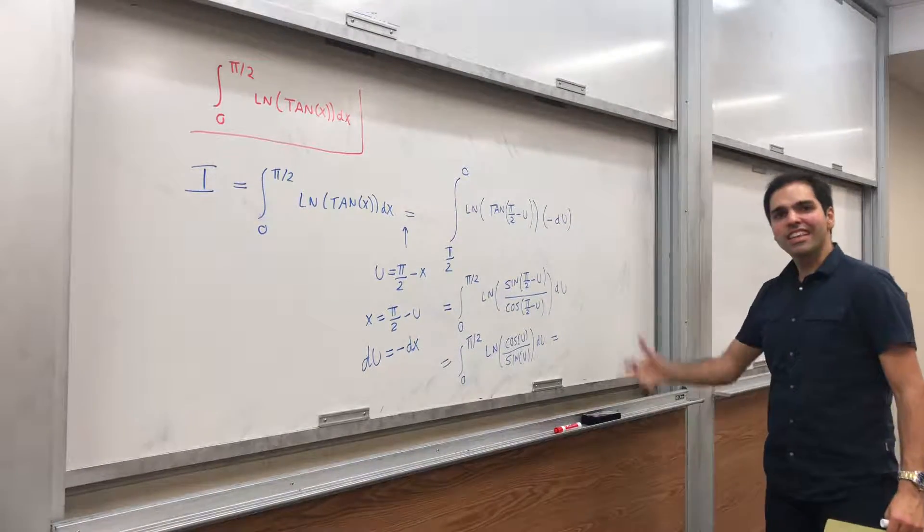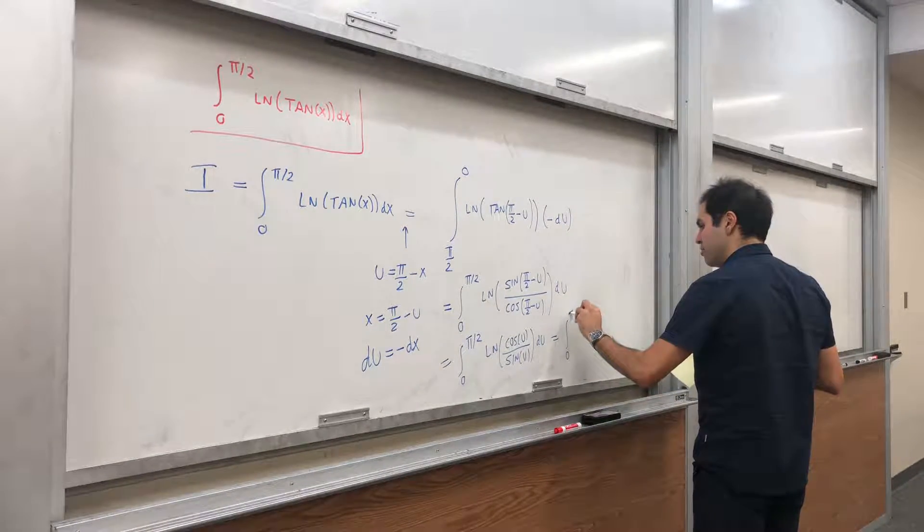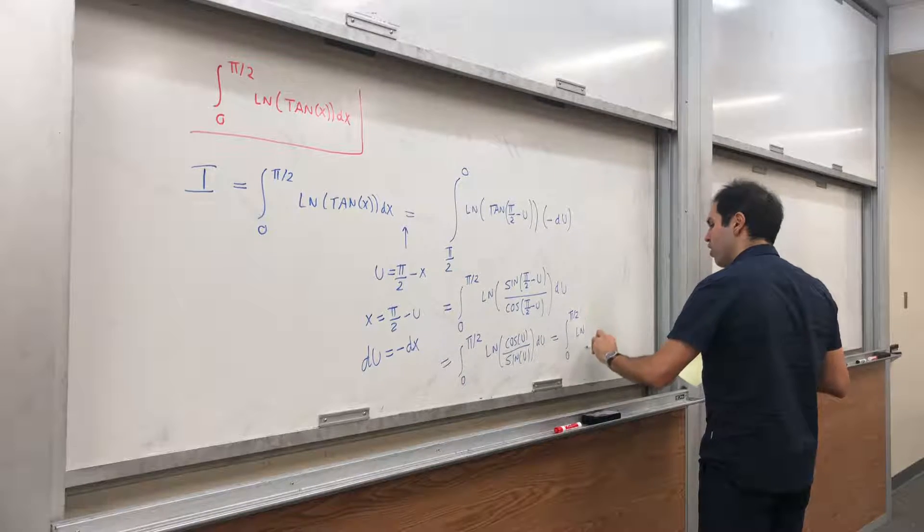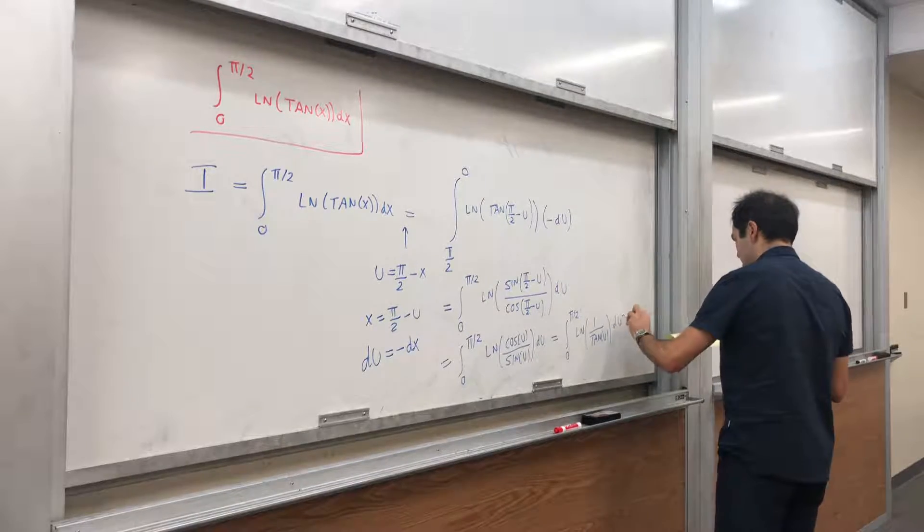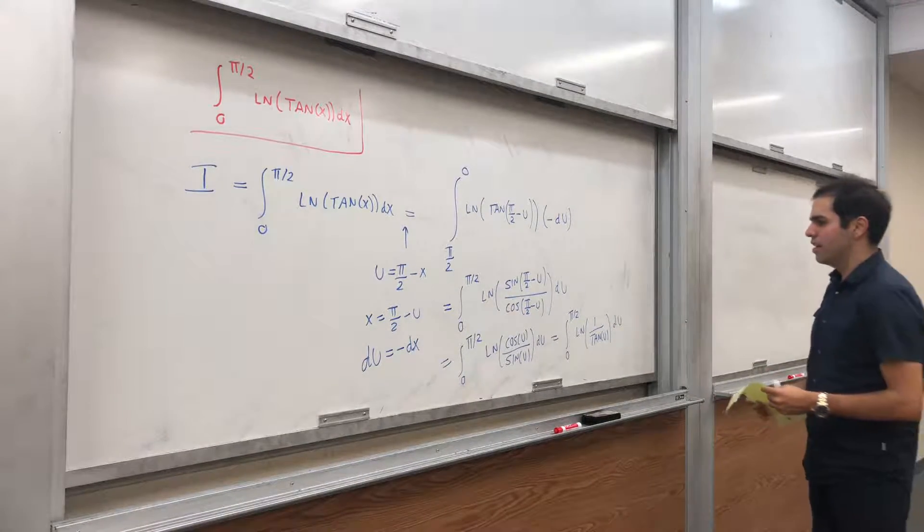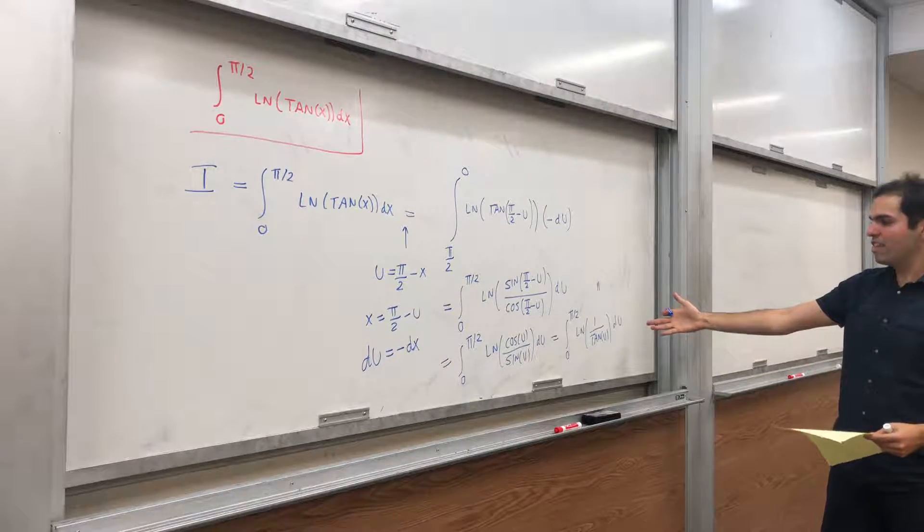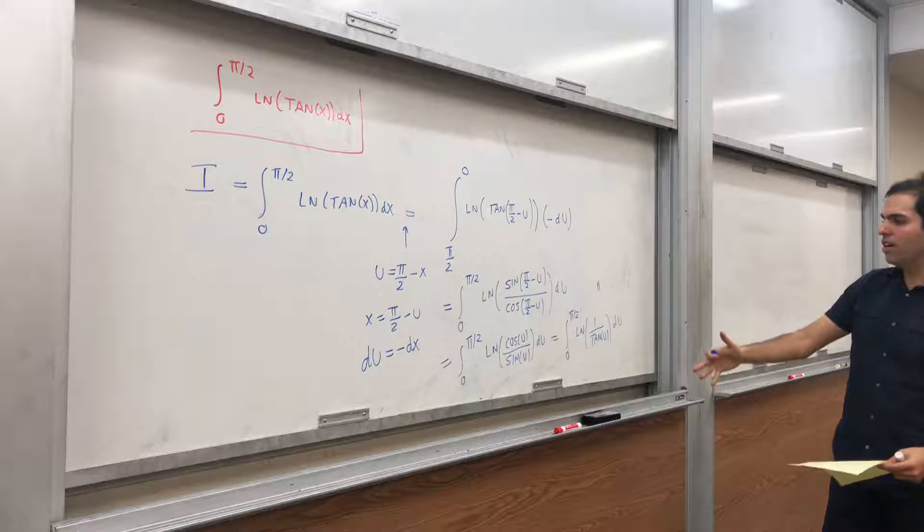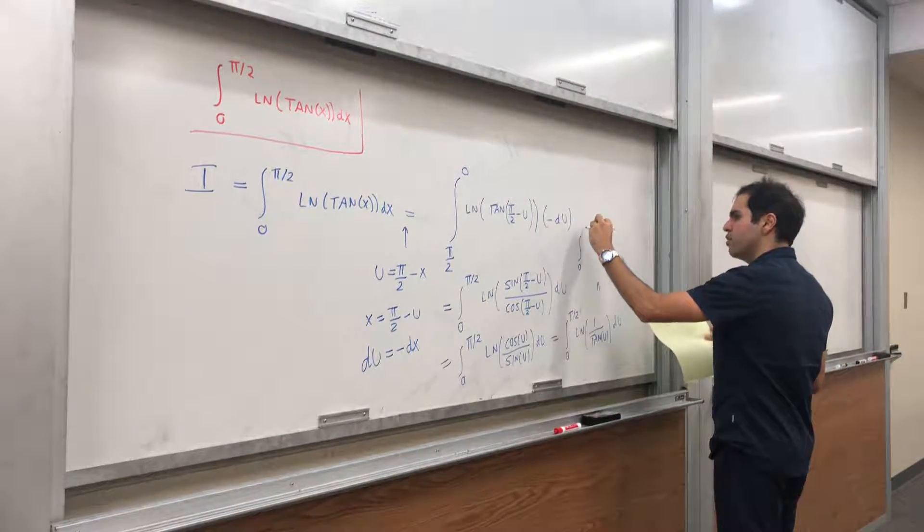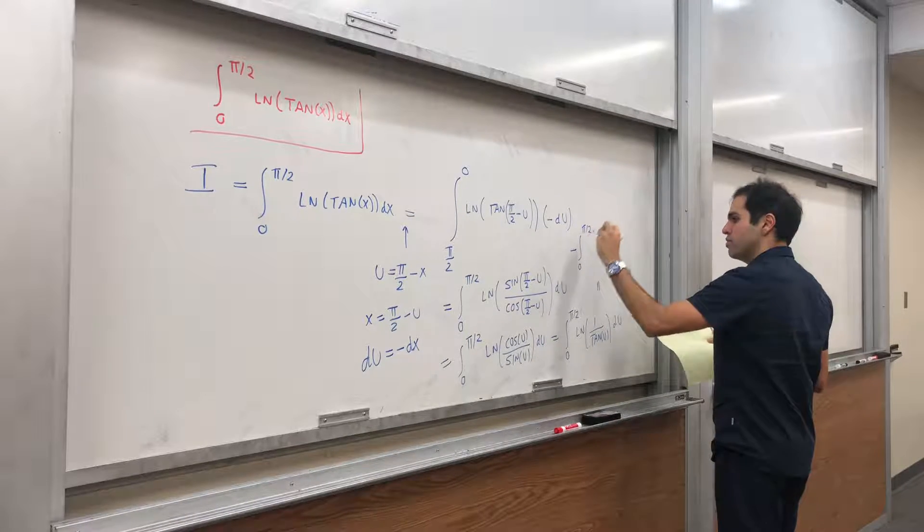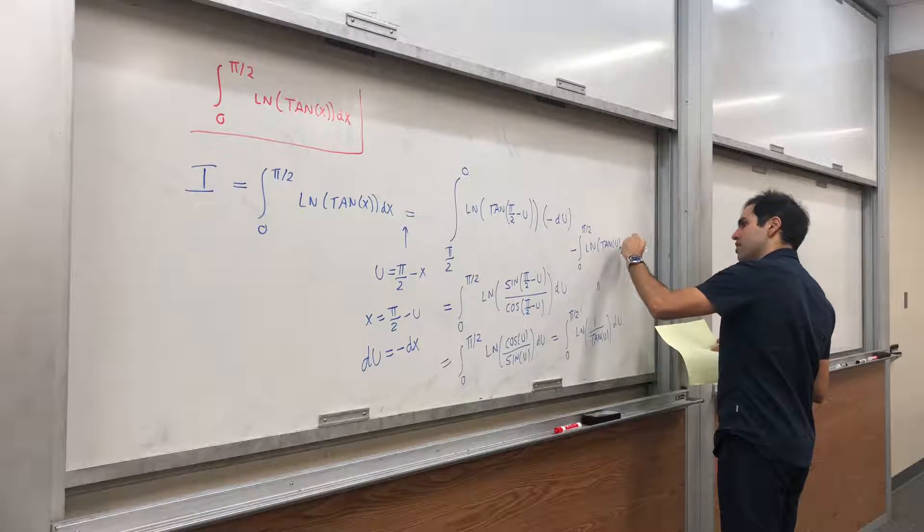So integral from 0 to π over 2, ln of 1 over tangent of x, or u, du. And let's see. ln of 1 over tangent of u is ln of 1 minus ln of tangent of u. So this just becomes integral from 0 to π over 2 minus ln of tangent of u, du.